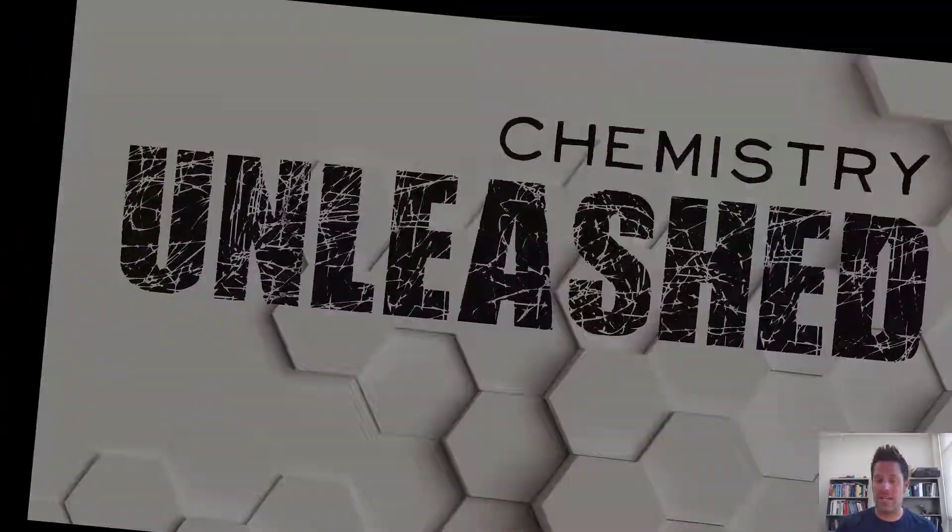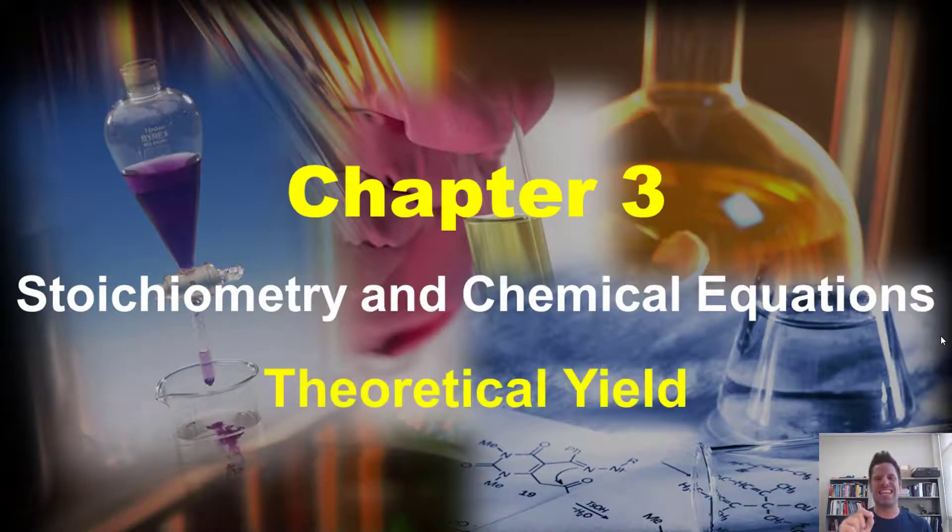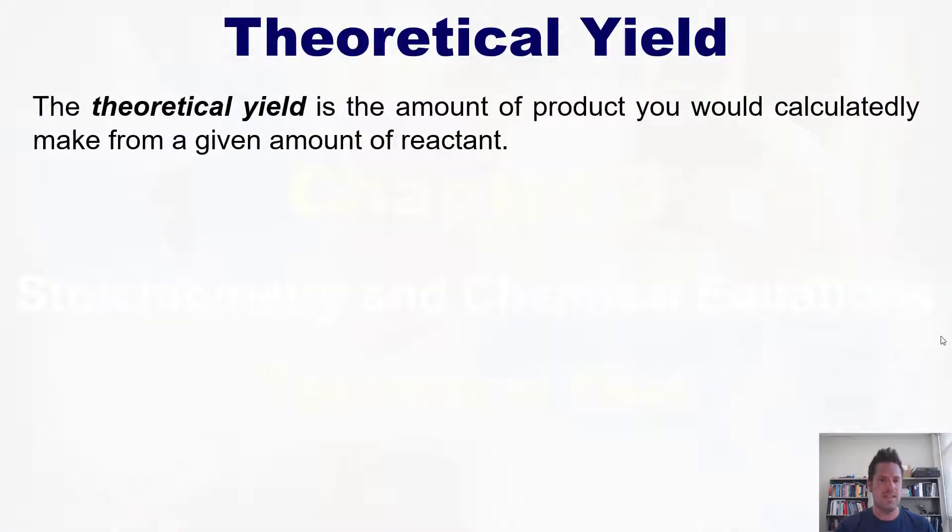In this chapter 3 video on stoichiometry and chemical equations, I will teach you theoretical yield. The theoretical yield is the amount of product that you would by calculation make from a given amount of reactant. In other words, it's the amount of product that you should theoretically make from a given amount of reactant.